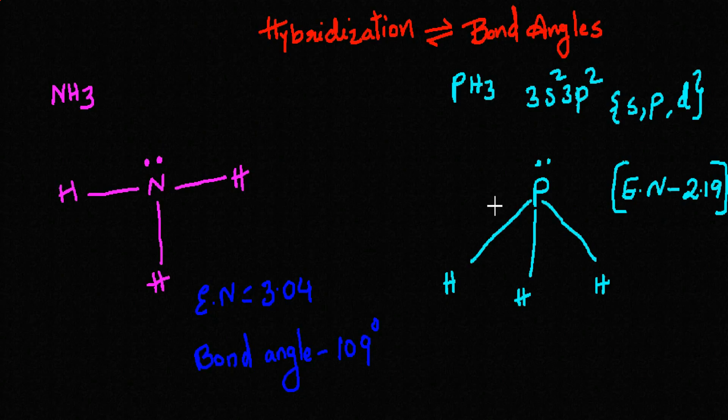Looking at the electronegativity difference between phosphorus and hydrogen: phosphorus has an electronegativity of 2.19 and hydrogen is 2.2 — there is essentially no electronegativity difference between these two atoms. Hybridization happens when there is an electronegativity difference. In this case, since there is no electronegativity difference, there is no hybridization in PH3.